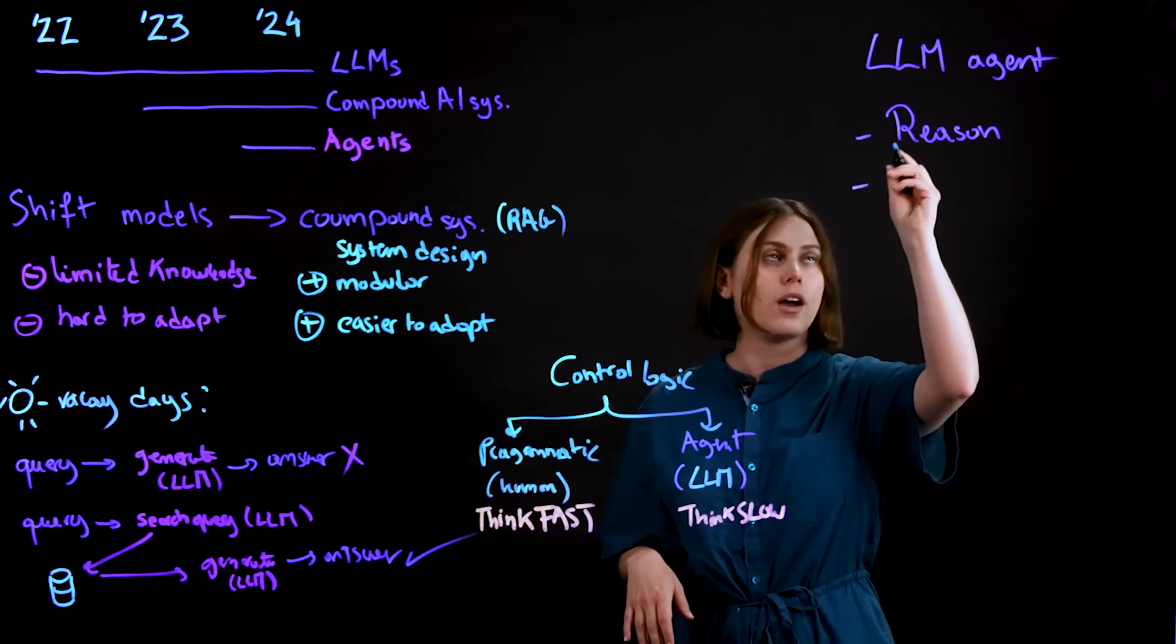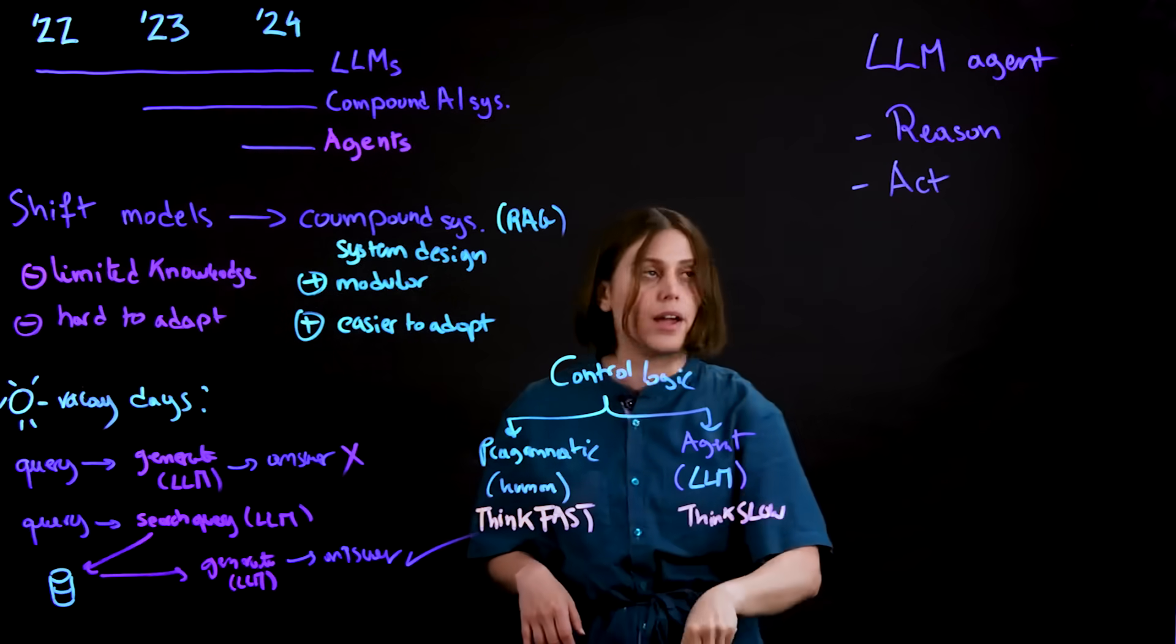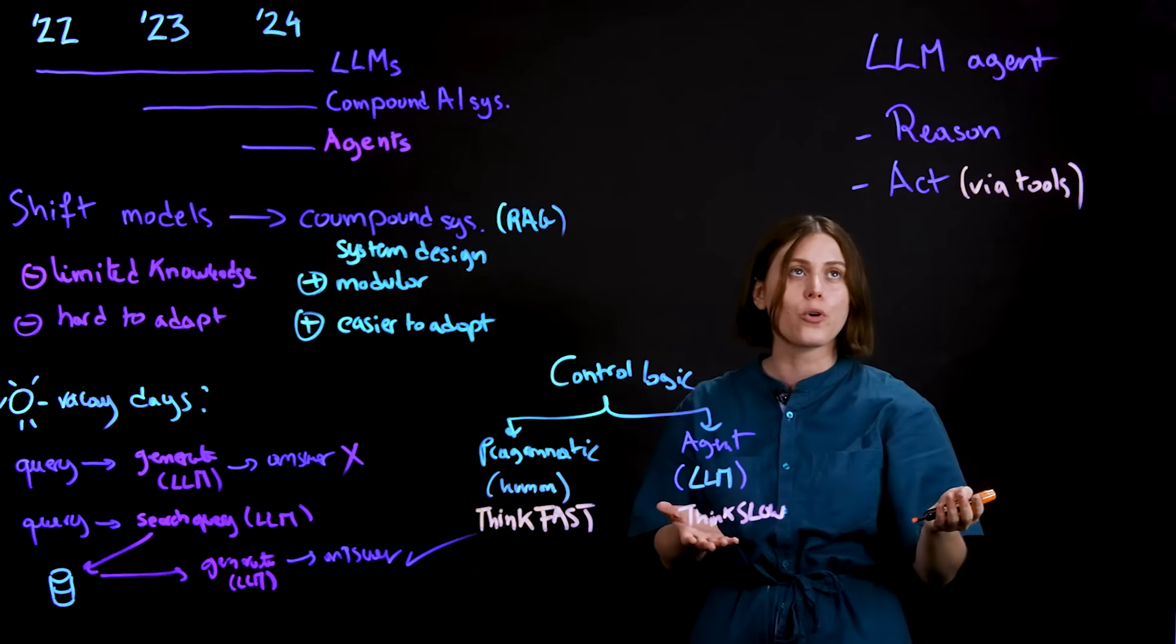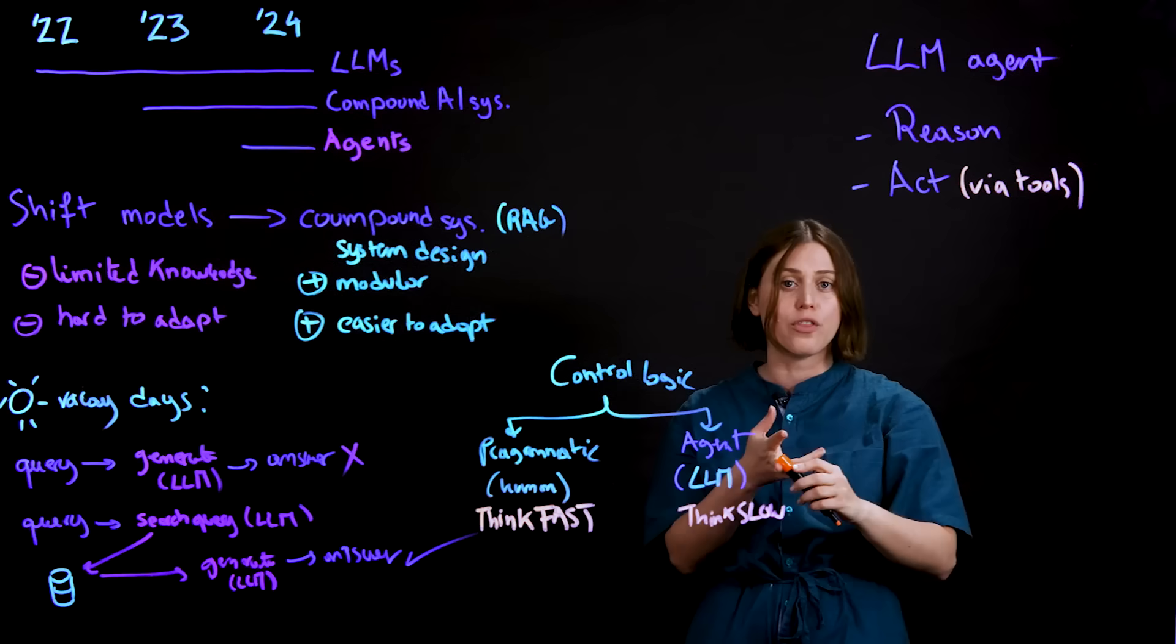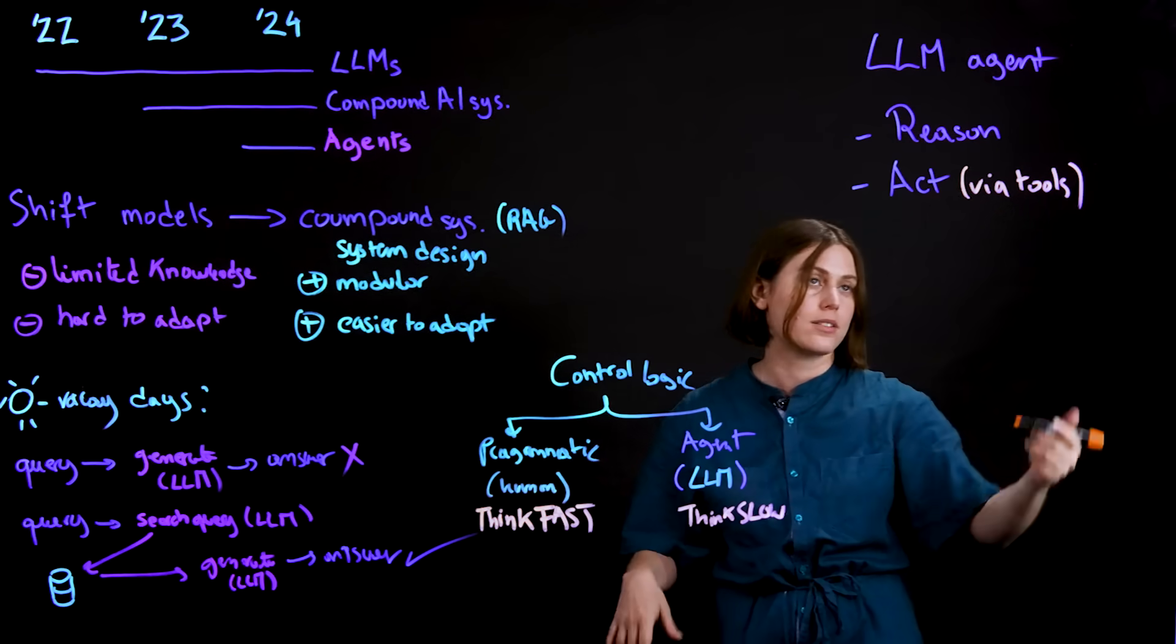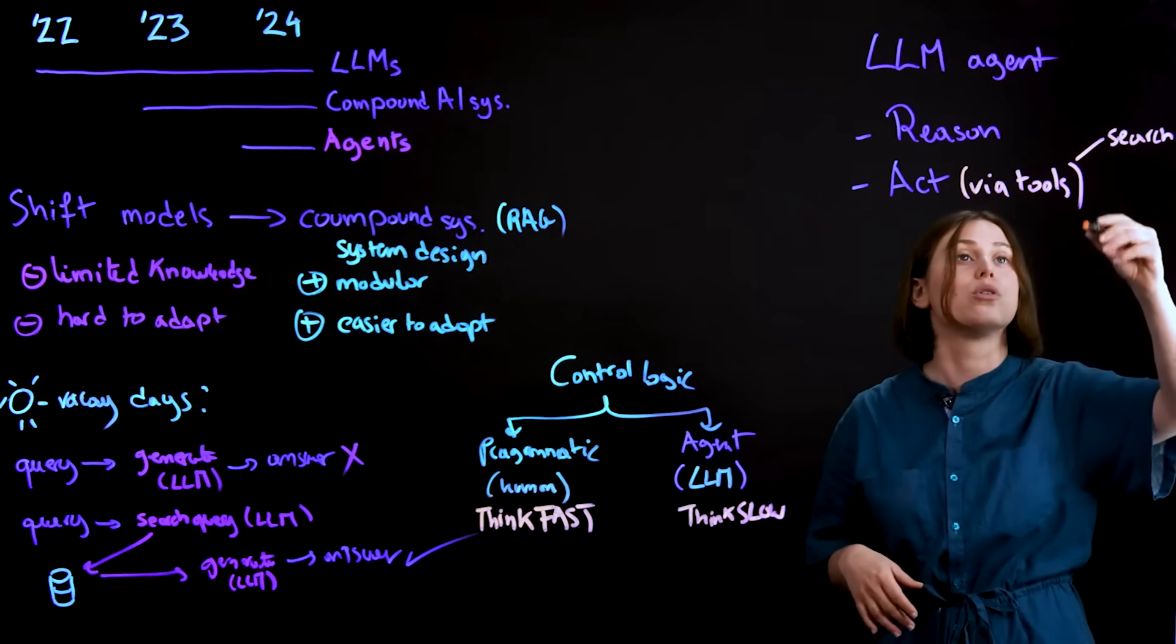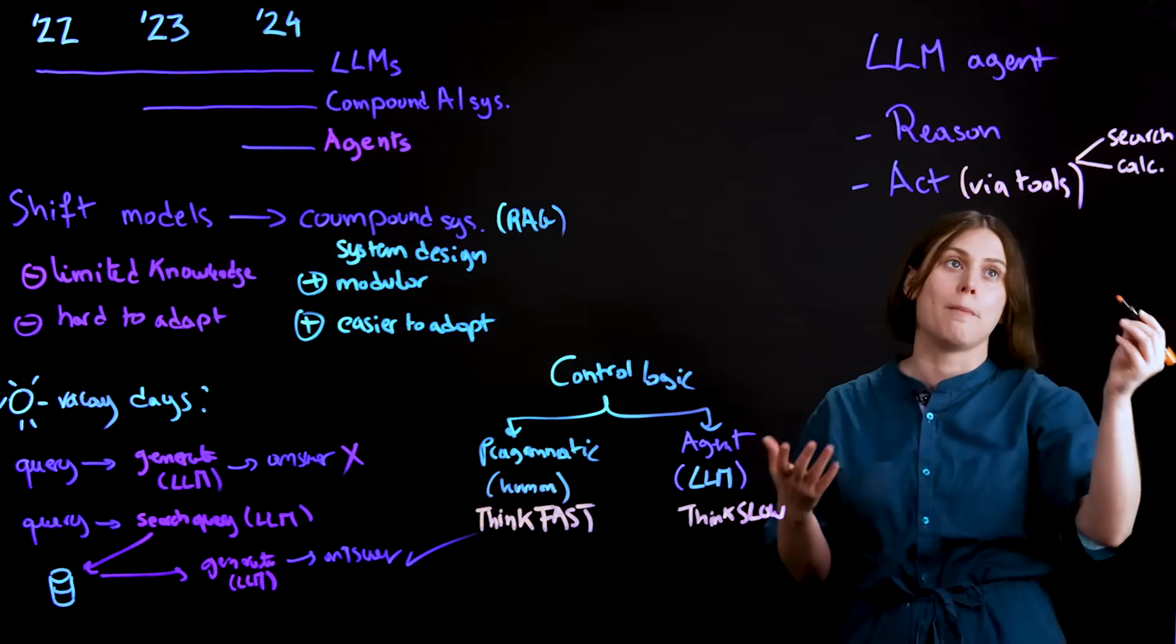Another capability of agents is the ability to act. This is done by external programs that are known in the industry as tools. Tools are external pieces of the program, and the model can define when to call them and how to call them in order to best execute the solution to the question they've been asked. An example of a tool could be search, searching the web, searching a database at their disposal. Another example could be a calculator to do some math.